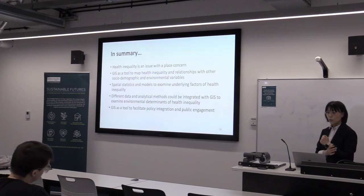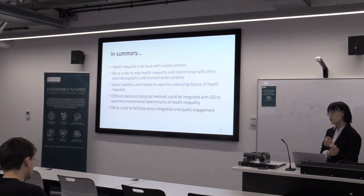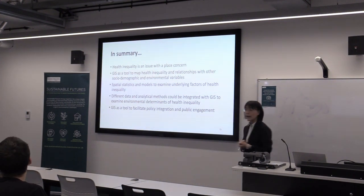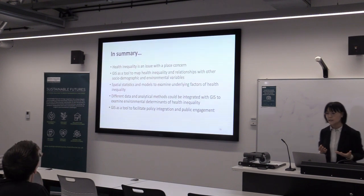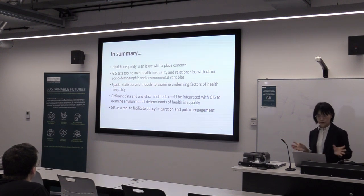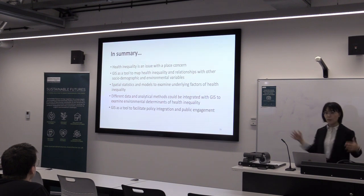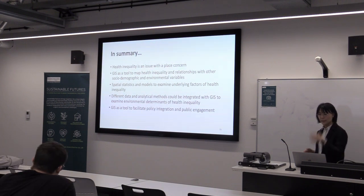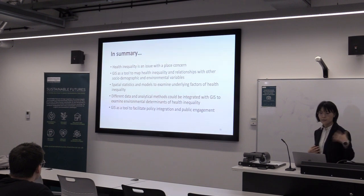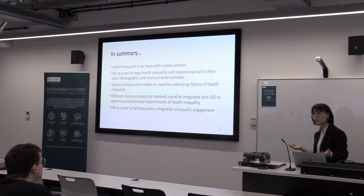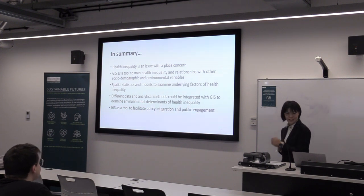We try to understand the environmental characteristics and link them with other socio-demographic variables to understand the obesogenic environment, so that we can answer how we can improve the health inequality issue, particularly the obesity issue. In summary: health inequality is an issue with place concern, and we can use GIS to map and visualize health inequality and how it is related to other factors. We can use spatial statistics and models to understand underlying factors, combining different types of data including geospatial and big data, and it is a very useful tool for communicating with stakeholders and policymakers.